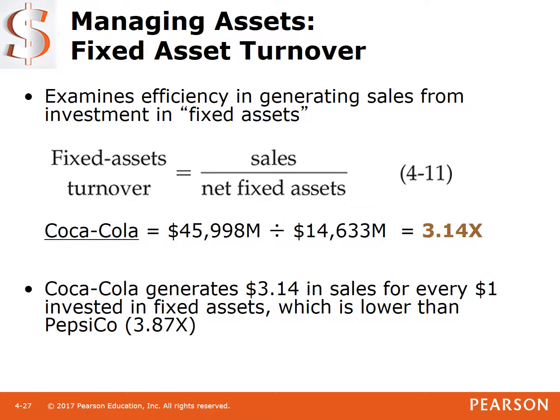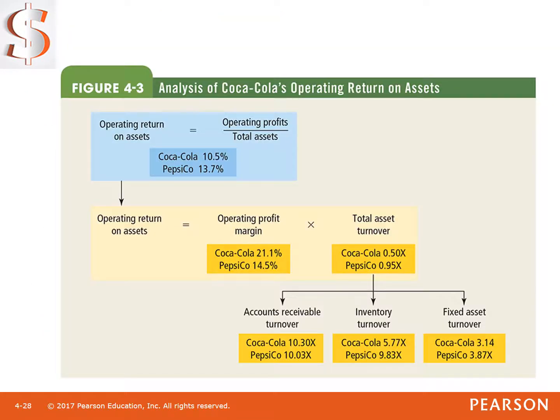Profitability ratios — this is an overall analysis. Our operating return on assets is really a combination of operating profit margin and total asset turnover. And total asset turnover itself is driven by accounts receivable turnover, inventory turnover, and fixed asset turnover. So operating profit margin times total asset turnover gives us operating return on assets. These ratios are all interrelated to one another.